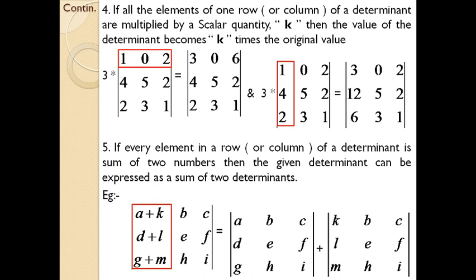So a+k, d+l, and g+m in one column can be written as two determinants by representing the sum of elements separately. Just go through all these properties and familiarize yourself with them, because you may come across cases where you have to prove whether a determinant satisfies a particular property. You need to know all the properties that come under determinants.